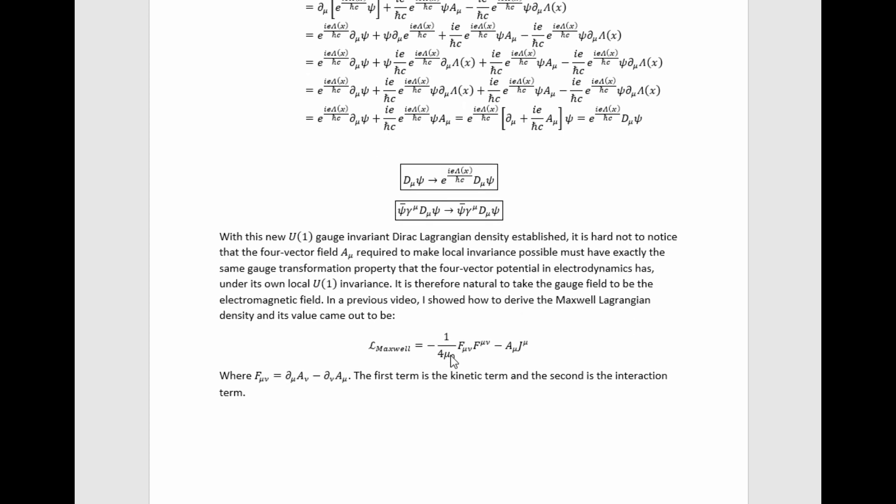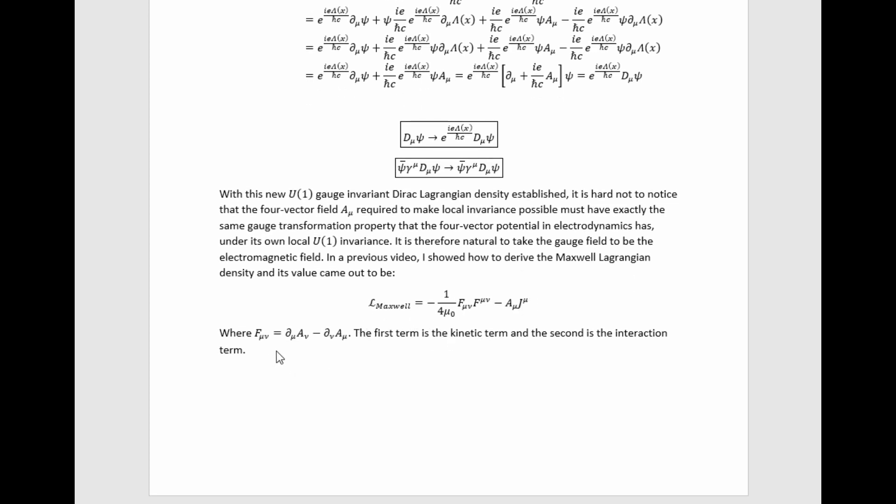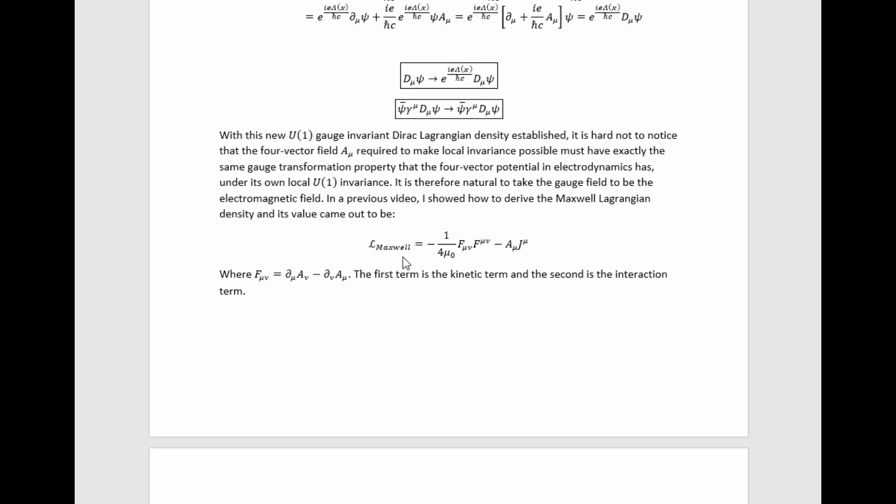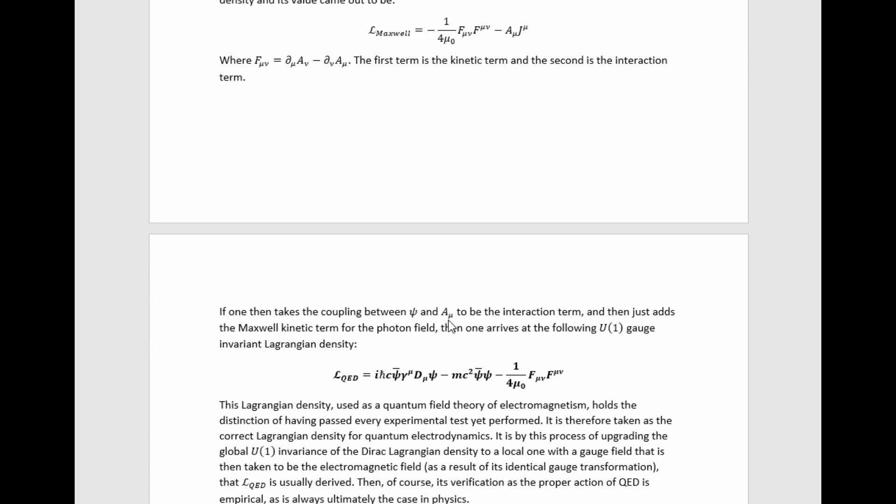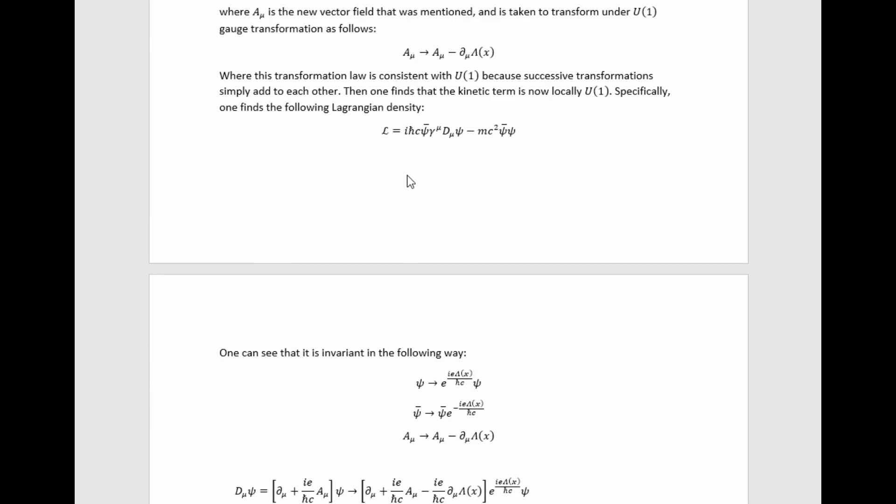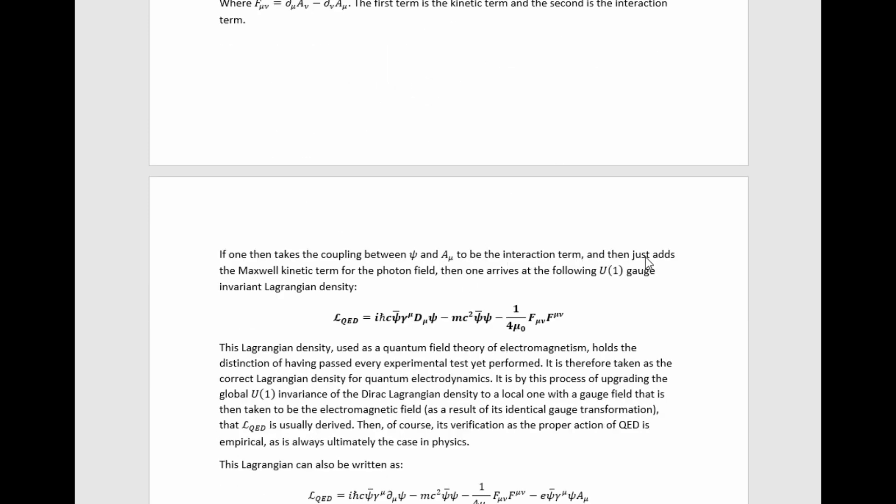In a previous video, I showed how to derive the Maxwell Lagrangian density and it ended up having this value where F mu is given by this formula in terms of the electromagnetic four-vector potential. The first term is called the kinetic term because it gives the dynamics of the electromagnetic field and then this is the interaction term because it gives its coupling to other fields. If one then takes the coupling between psi and A mu observed in this Lagrangian up here to be the interaction term and then just adds the Maxwell kinetic term for the photon field, or I call it the photon field because we've already identified the gauge field as the electromagnetic field and of course the field quanta of that turn out to be photons. Perhaps that's a bit of a foreshadowing reference there, but still, whatever.